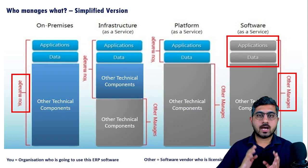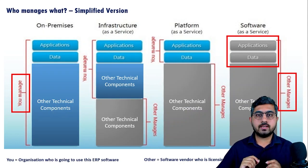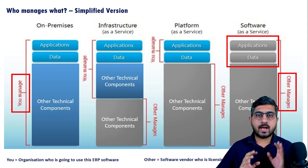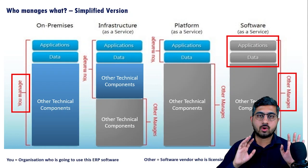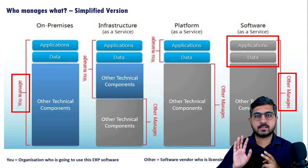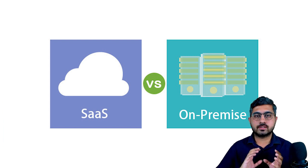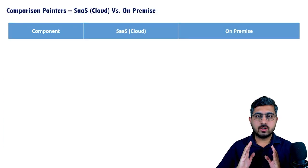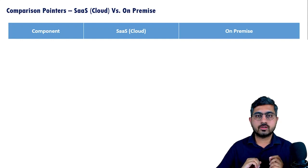On the other hand, if all of these things are managed by you as an individual customer, then it is essentially an on-premise application. Somewhere in between on-premise and SaaS-based applications, you have Infrastructure as a Service and Platform as a Service, but let's understand those terms later. For now, let's focus on SaaS versus on-premise.